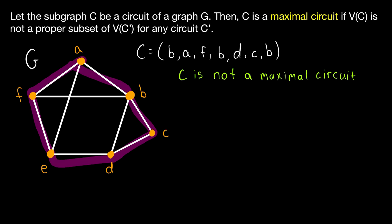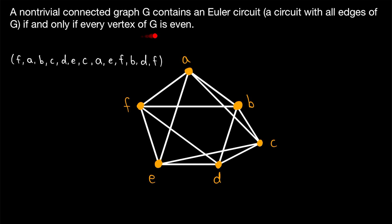You might then ask whether we could find a circuit containing all vertices and all edges. The answer is no, and it comes down to the parity of vertex degrees. A circuit of a non-trivial connected graph that contains all of its edges must also contain all of its vertices — that's unavoidable — and such a circuit is called an Euler circuit. Here is the well-known Euler circuit theorem: a non-trivial connected graph G contains an Euler circuit — a circuit with all edges of G — if and only if every vertex of G has even degree.